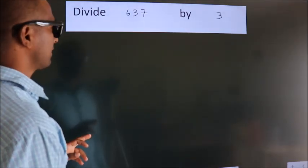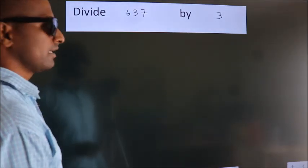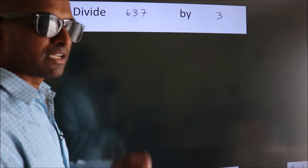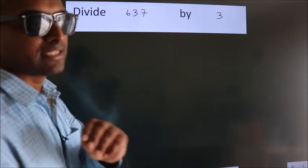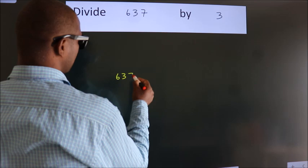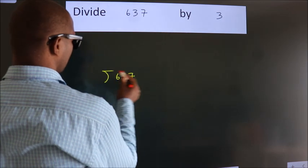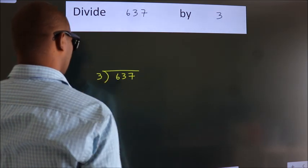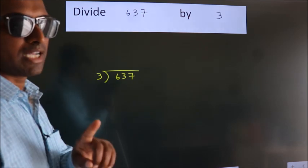Divide 637 by 3. To do this division, we should frame it in this way: 637 here, 3 here. This is your step 1.